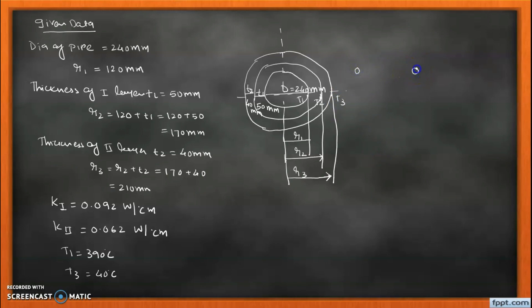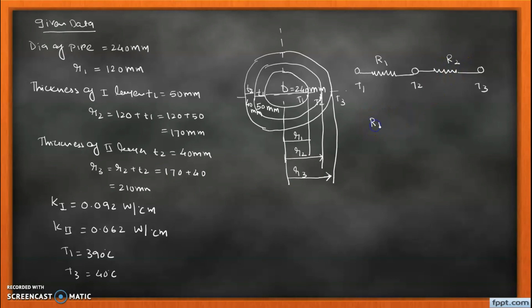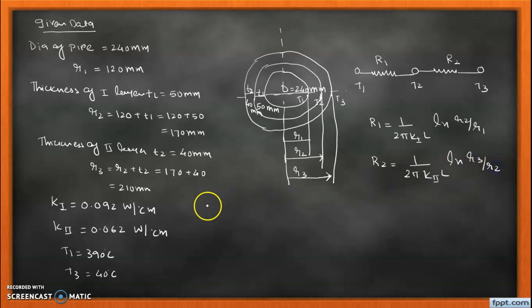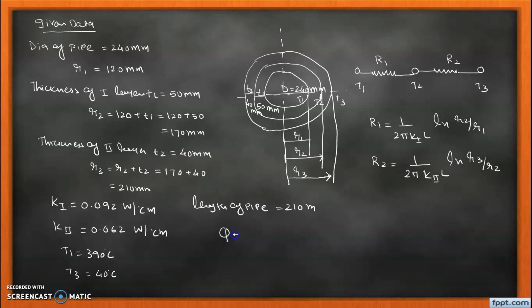We make an electrical analogy for solving this problem. With temperatures T1, T2, and T3, and thermal resistances R1 and R2 for each layer, the formulas for cylindrical geometry are: R1 = (1 / 2πk1L) · ln(r2/r1) and R2 = (1 / 2πk2L) · ln(r3/r2). The pipe length L is 210 meters. We need to find the heat loss rate Q and the interface temperature T2.